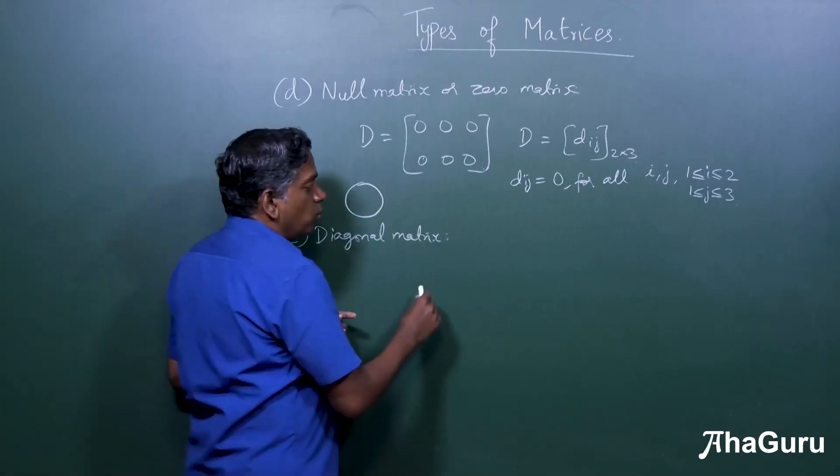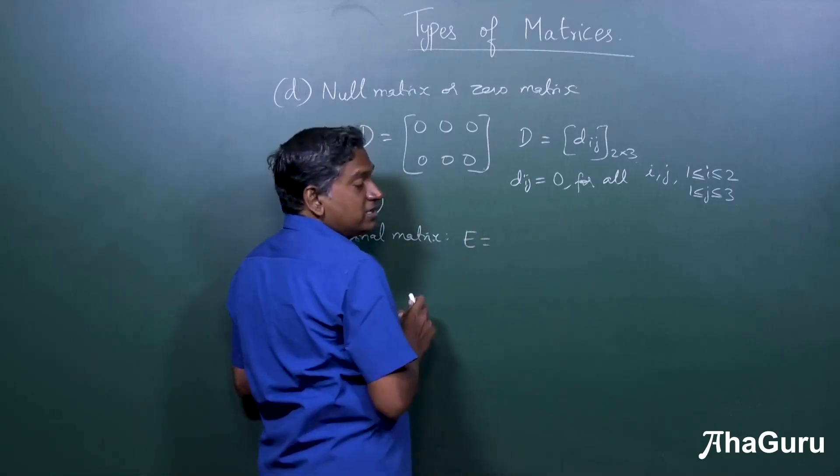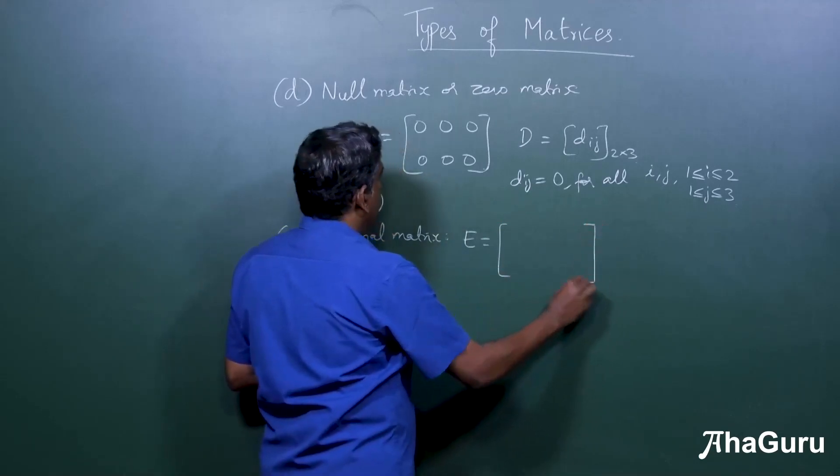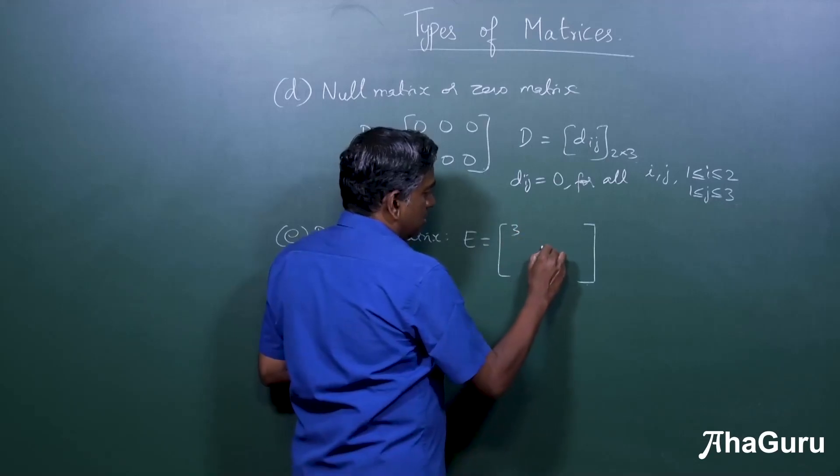The next idea is what we call as a diagonal matrix. A diagonal matrix is one where all the non-diagonal entries are zero. For example, if I call E as a diagonal matrix.